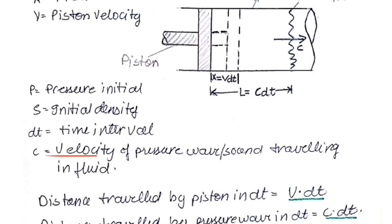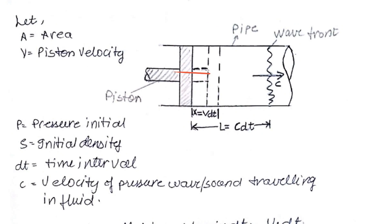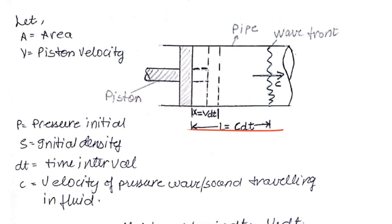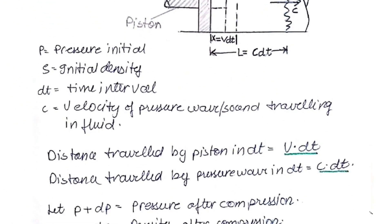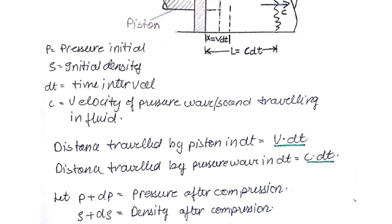Let c be the velocity of the pressure wave travelling in the fluid. As a result of the piston's movement, a pressure wave is formed travelling at speed c. The total distance travelled by the pressure wave is l = c · dt, where c is the speed of the wave and dt is the time. So the distance covered by the piston in dt is v · dt, and the distance covered by the pressure wave in dt is c · dt.